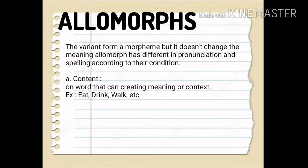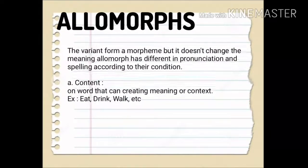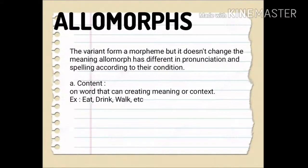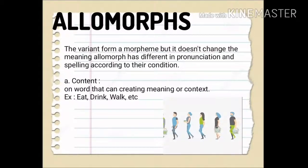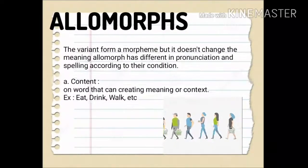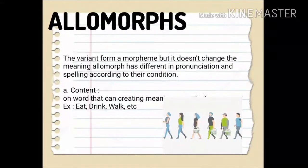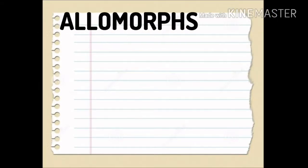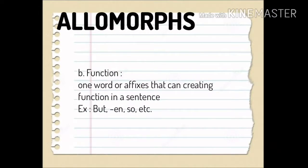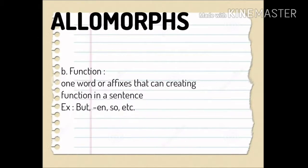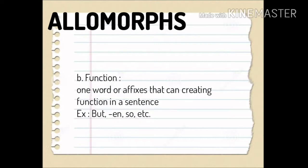Allomorphs are the variant forms of a morpheme, but they don't change the meaning. Allomorphs differ in pronunciation and spelling according to their context. For example, content morphemes: eat, drink, meat; and functional morphemes: um, end, show, but, or, etc.